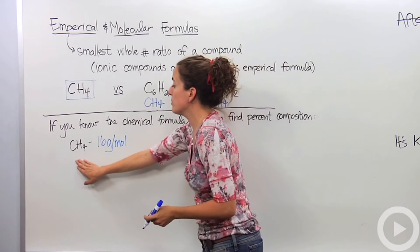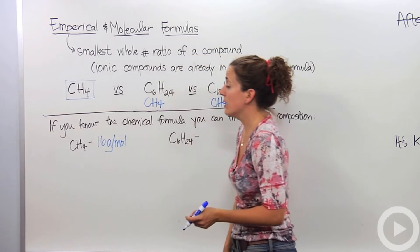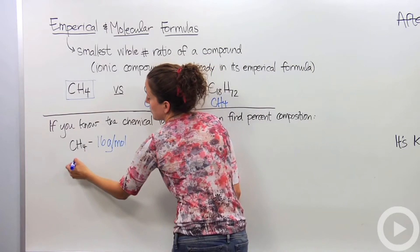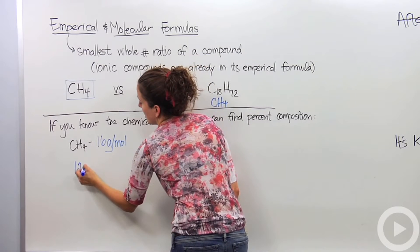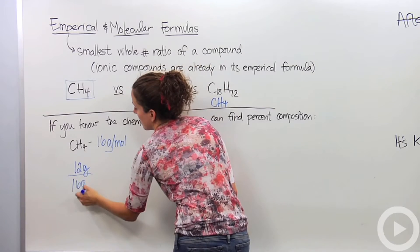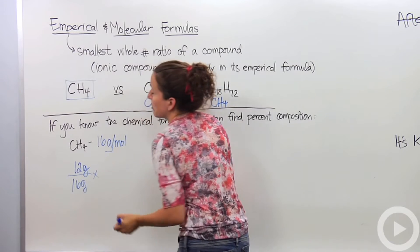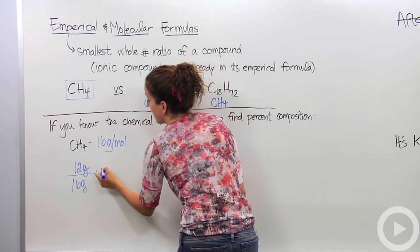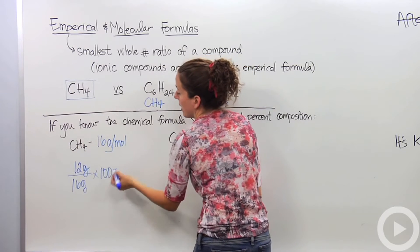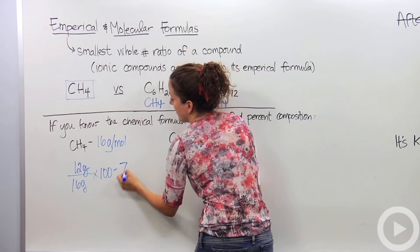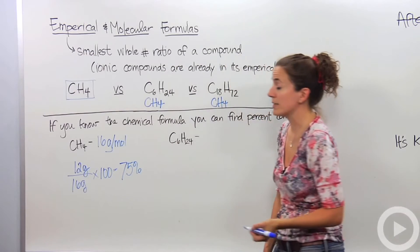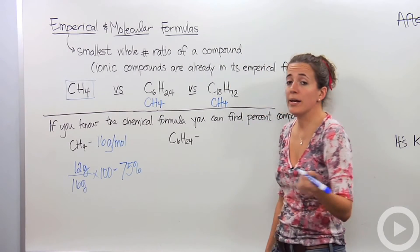We're going to find the percentage of each element. Carbon has a mass of 12 grams, as we get from the periodic table. The whole compound has a mass of 16 grams. Since it's a percentage, we multiply by 100, and we find that carbon occupies 75% of this compound.